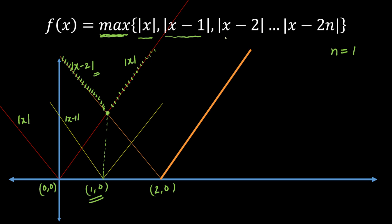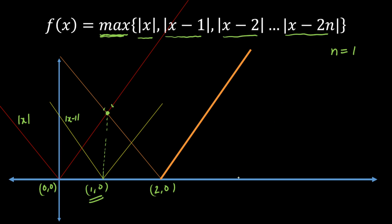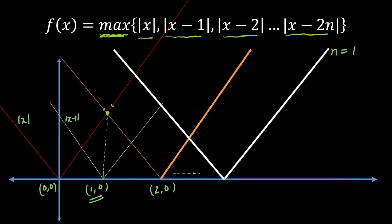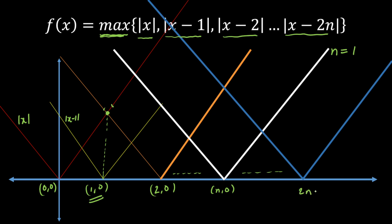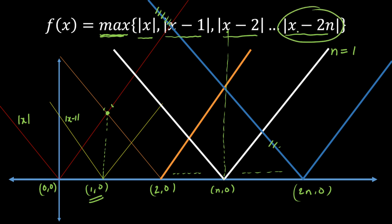Now once I do that, I can generalize for all these functions till mod of x minus 2n. I will remove the traced line and draw all the functions. So if I draw all the functions till mod of x minus 2n, it goes till the midpoint at n comma 0, and the next one is mod of x minus 2n passing through (2n, 0). Before the midpoint, mod of x minus 2n will be the maximum — that is the logic developed using the three graphs.